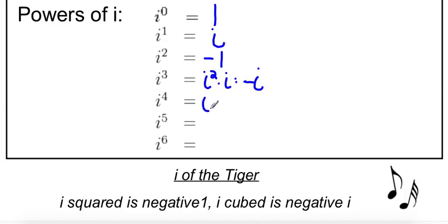Then i to the fourth, that's the same thing as i squared times i squared. And i squared is just negative 1, so this is the same thing as negative 1 times negative 1, which is positive 1.